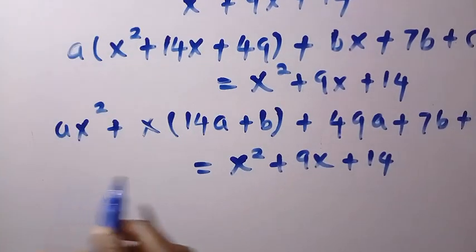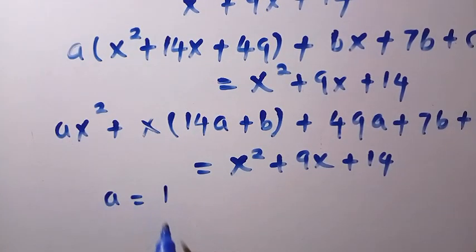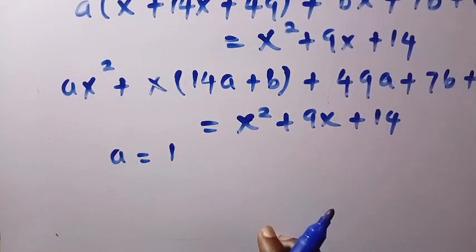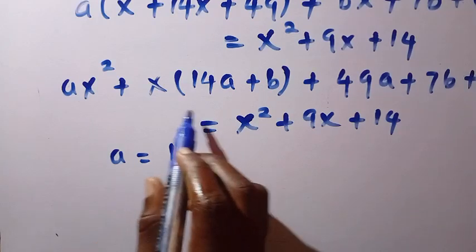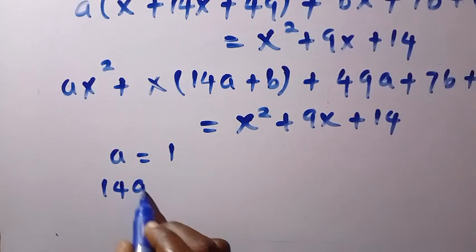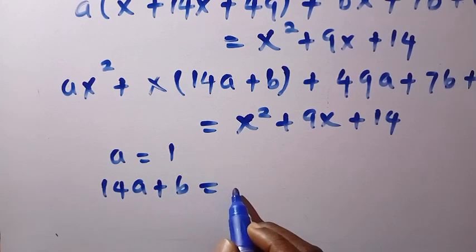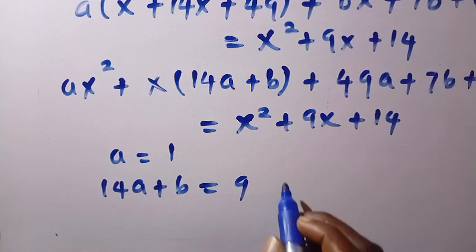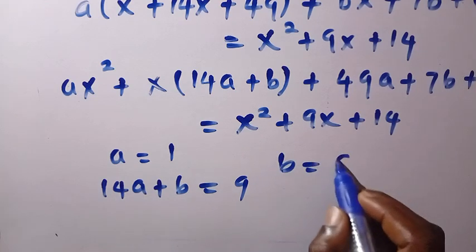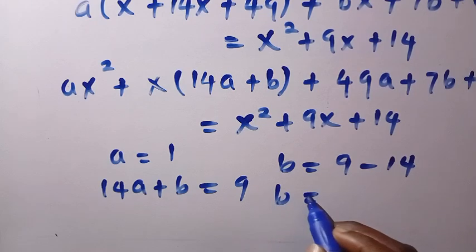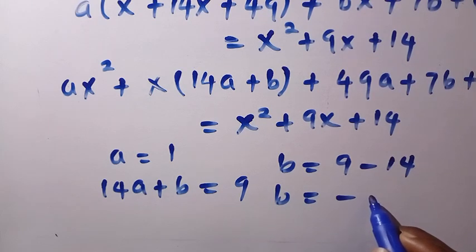So, therefore, comparing this, we have a here, which equals 1, because of this coefficient. And also, for the second one, having the coefficient of x, we are going to have it as 14a plus b equals 9. And by replacing a with 1, we are going to have b equals 9 minus 14 and b equals minus 5.